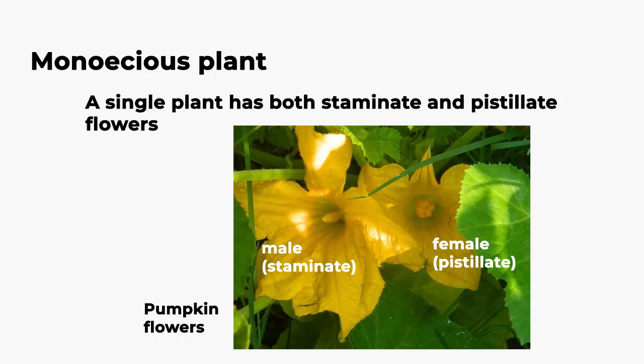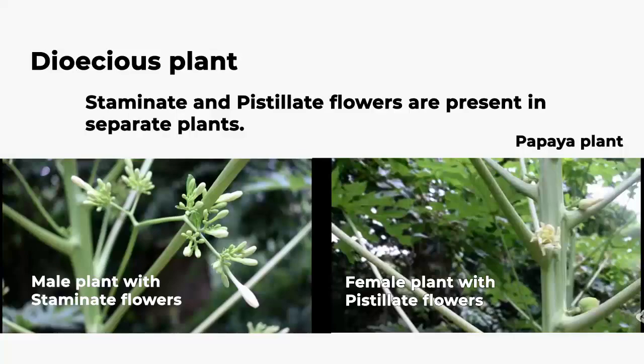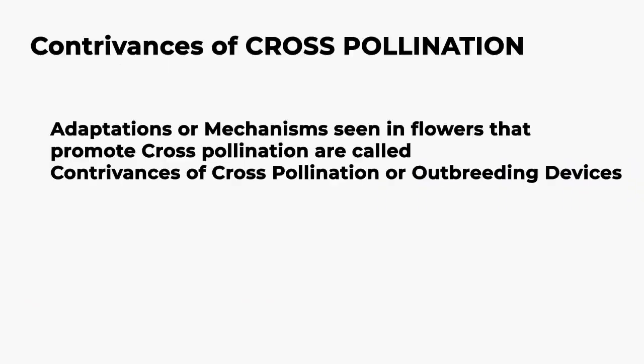If both unisexual flowers are seen in the same plant, it is called a monoecious plant — example, pumpkin. The single plant has both staminate and pistillate flowers. If staminate and pistillate flowers are seen in separate plants, it is called dioecious — example, papaya. In papaya, the male plant has staminate and the female plant has pistillate flowers.